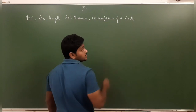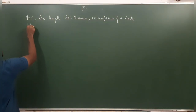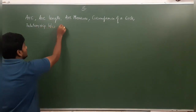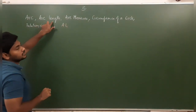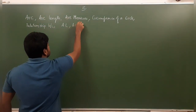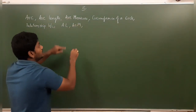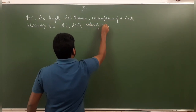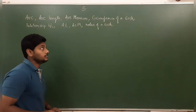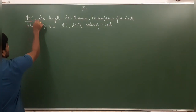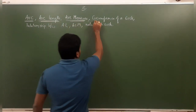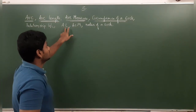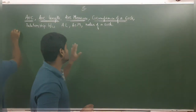The topics we are going to discuss are: arc, arc length, arc measure, circumference of a circle, and the relation between arc length L, arc measure, and radius of a circle. First of all, an arc is a segment of a circle around the circumference.